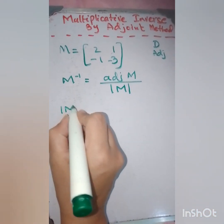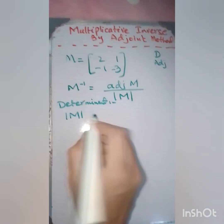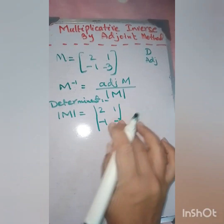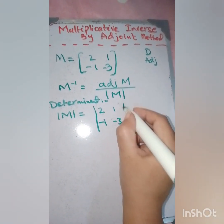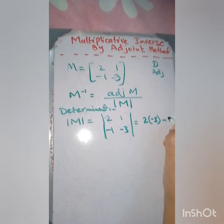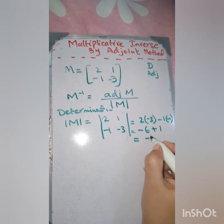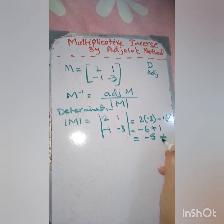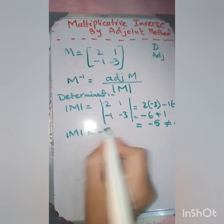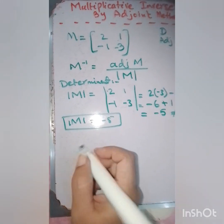Finding the determinant of M for the matrix [2, 1; -1, -3]: using AD minus BC, we get 2 times -3 minus 1 times -1, which is -6 plus 1, giving minus 5. Since it is not equal to zero, the matrix is non-singular and we can proceed. So the determinant of M equals -5.